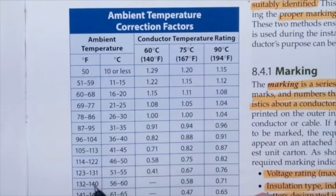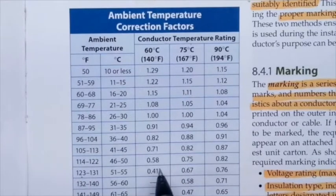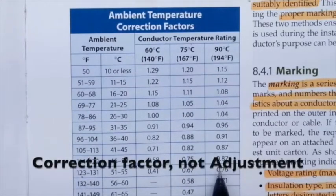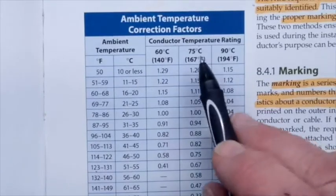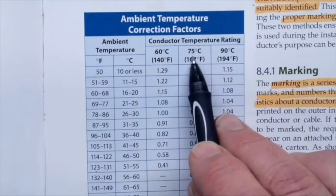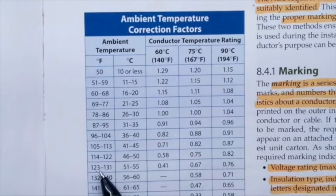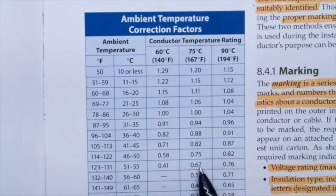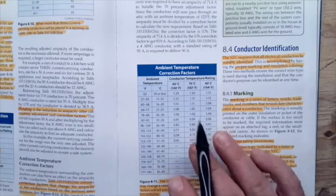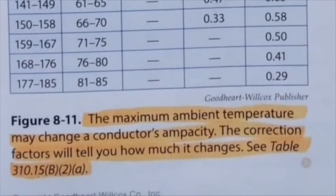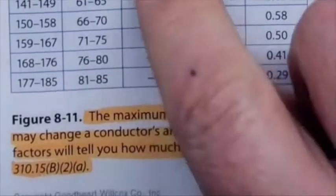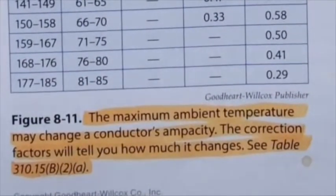So if the ambient temperature is 130°F — which falls between 123 and 131 — I come across the 90°C column and get a correction factor of 0.76. For THWN at 130°F, I'd use the 75°C column and get 0.67. This ambient temperature correction factor chart is found in NEC Table 310.15(B)(2)(a) — it's important to know where to find this in the code book.